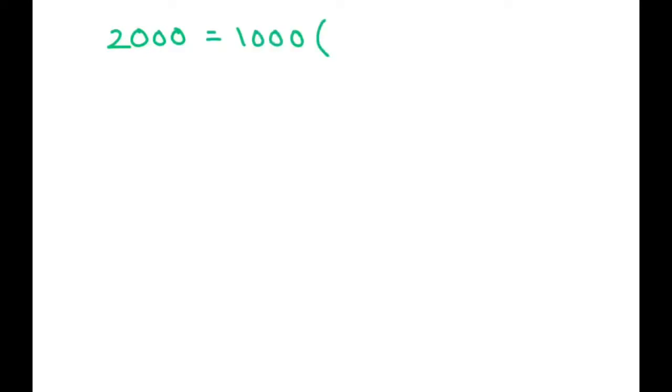You can write it like this: 2,000 equals 1,000 times 1 plus 0.18 over 365, and then we have 365, and our unknown is t.